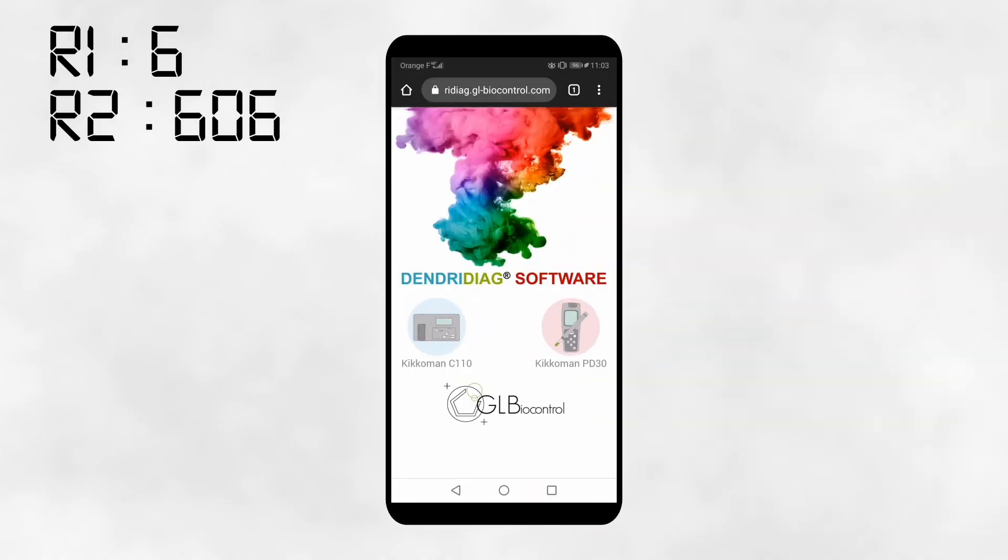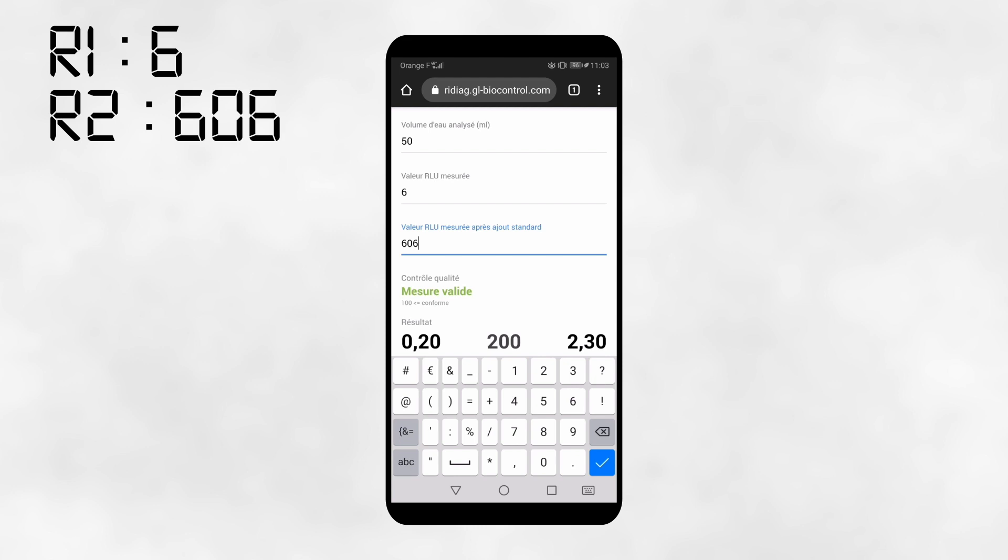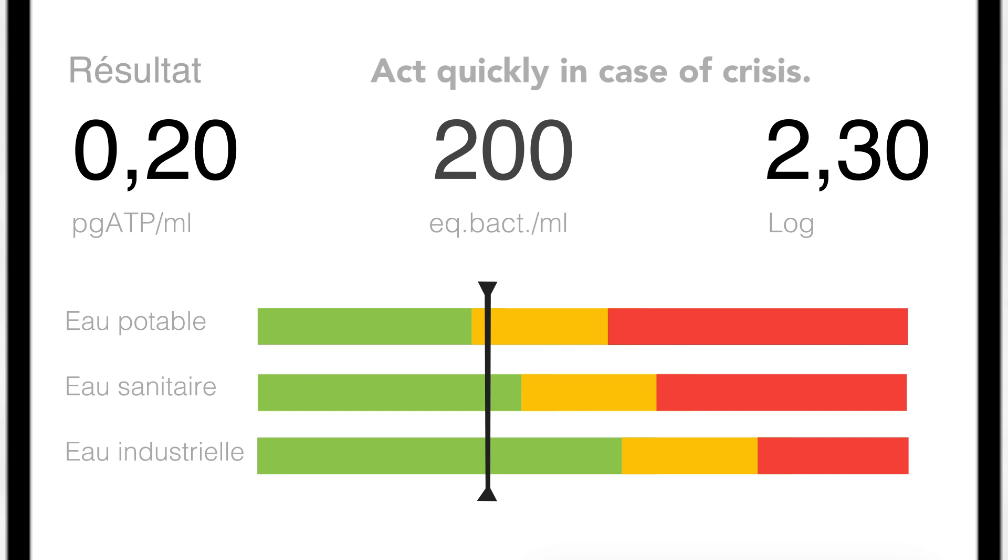An app helps you interpret your results directly. Enter the volume and the two results obtained. Simple as that. The app specifies the quantity of bacteria in your water. Thanks to a colour code, you're informed if a corrective action is required.